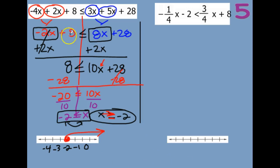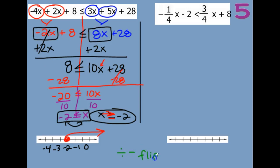If you would have moved the 8x over right away, you would have had to divide by a negative number, which means you're going to have to flip your inequality symbol the other direction.